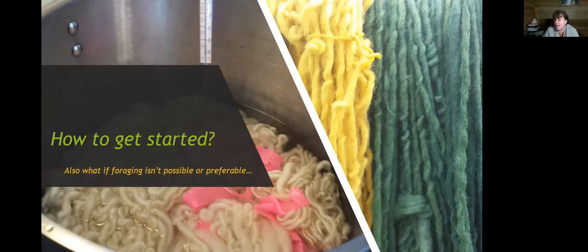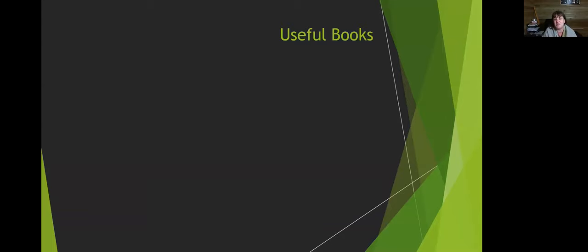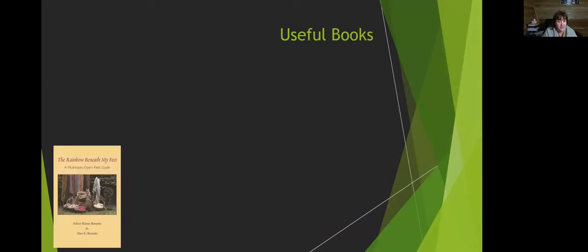What if foraging isn't possible or preferable — not everyone can physically head out? There are dye workshops: here in Vancouver we run natural dye workshops twice a year. Definitely check out Alissa Allen — she runs a group called Mycopigments and lots of workshops, and she's starting to go online. Useful books: number one is 'Rainbow Beneath My Feet: A Mushroom Dyer's Field Guide.' Be aware it's a little outdated for scientific names and doesn't really deal with pH — being aware of pH can radically shift the colors you get.